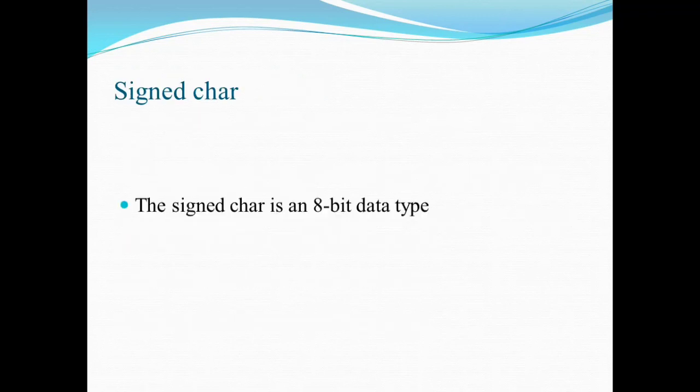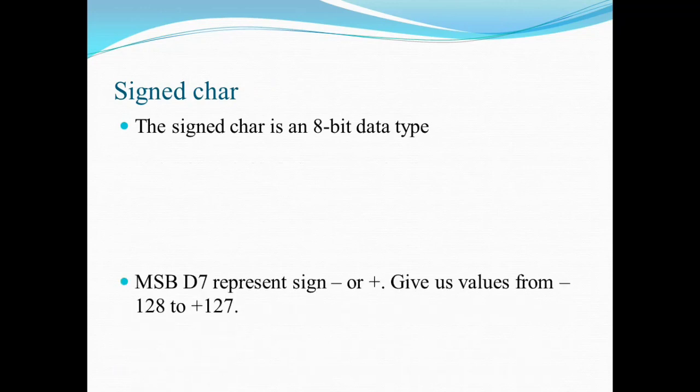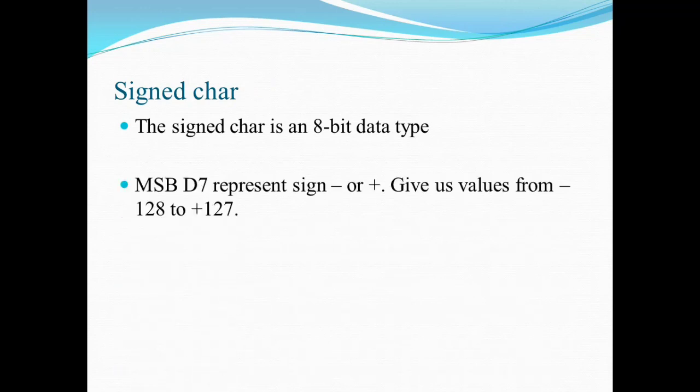The signed character is again an 8-bit data type. As it is a signed character, the last bit or the seventh bit is reserved for the sign. MSB D7 represents the sign, and the magnitude bits are only from D0 to D6. Therefore, the range will be from -128 to +127.